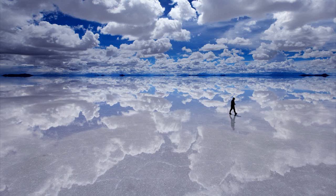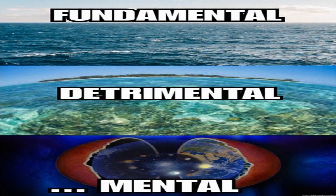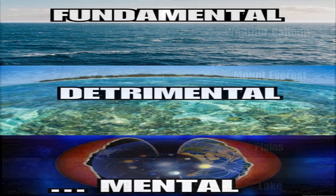Anyone looking into alternative Earth cosmologies will inevitably run across three main options for the general alleged shape of the Earth: either Earth is a level plane devoid of any curvature, a convex sphere upon which we live outside, or lastly, a concave sphere upon which we live inside.